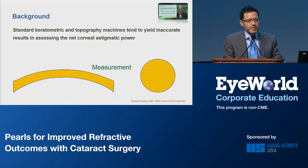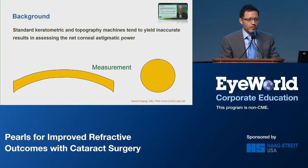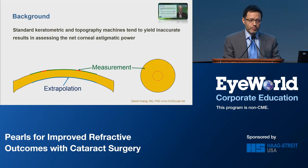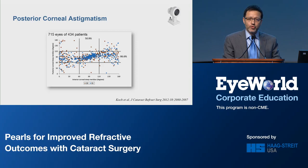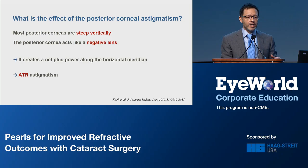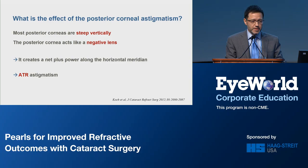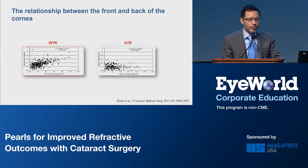It's been six years now since Del Koch had reminded us of the role of the posterior cornea in Toric IOL calculations, and that standard keratometry and topography machines tend to yield inaccurate results in assessing the net corneal astigmatic power. They measure the anterior cornea and extrapolate the posterior cornea by using a fixed ratio, which is not correct. Dr. Koch and his group evaluated the posterior cornea in a large group of patients using a Scheimpflug device, and found that most posterior corneas were steep along the vertical meridian. Since the posterior cornea acts like a negative lens, it will actually create a net plus power along the horizontal meridian, inducing against-the-rule astigmatism.